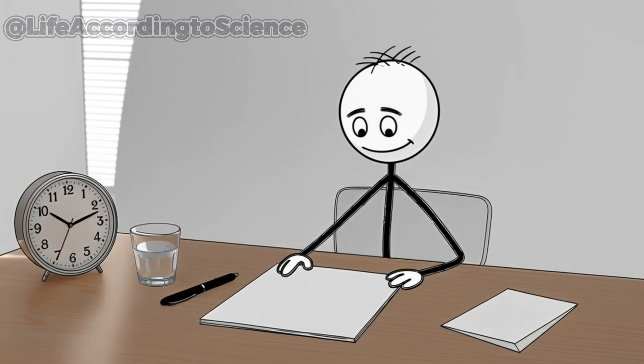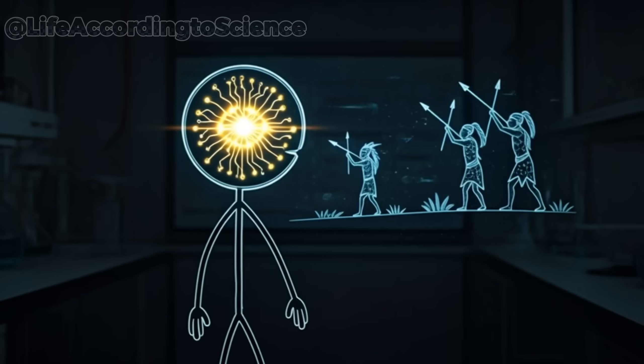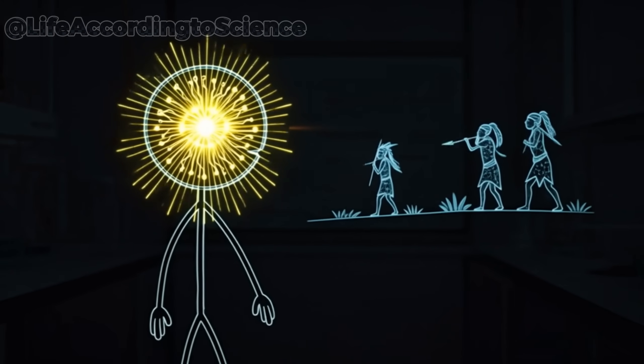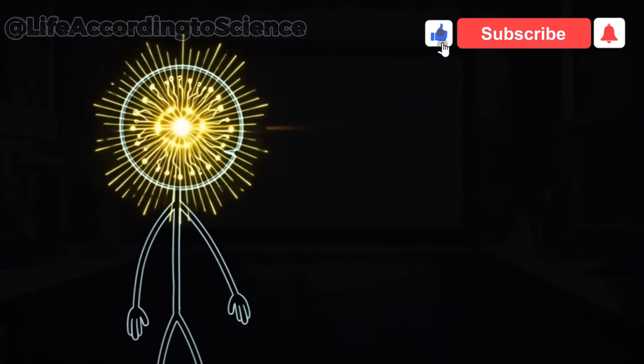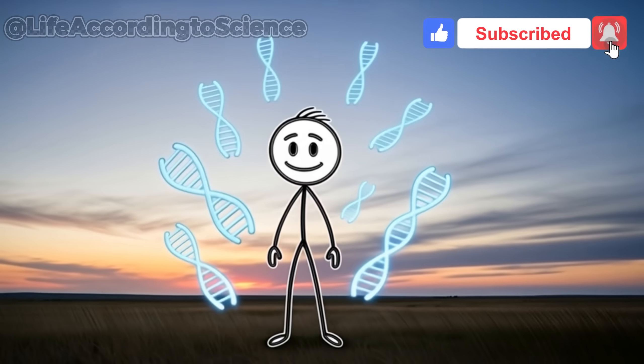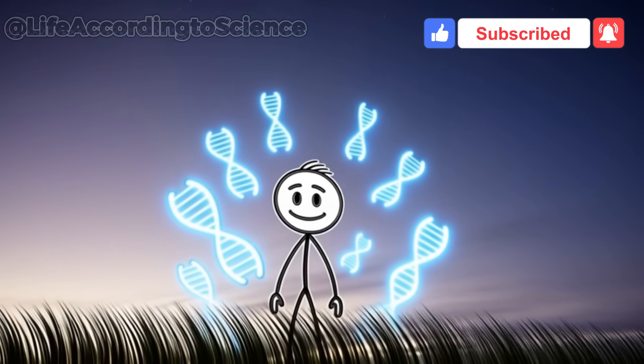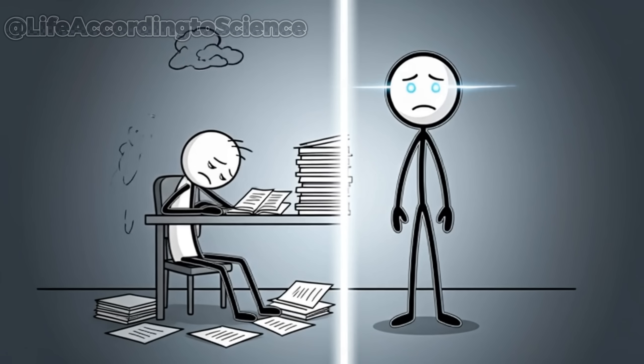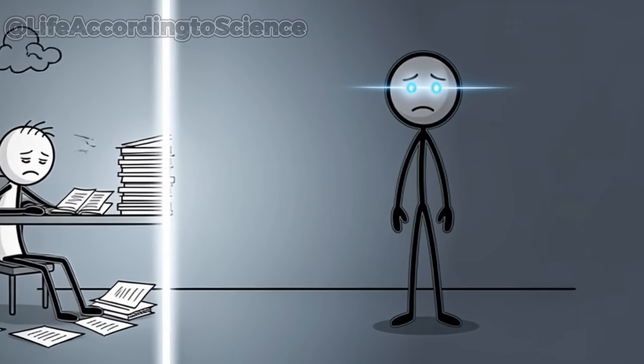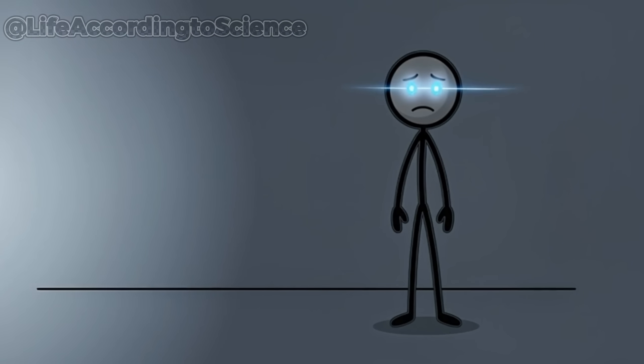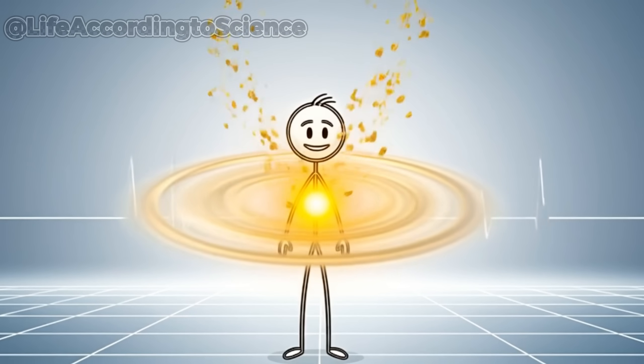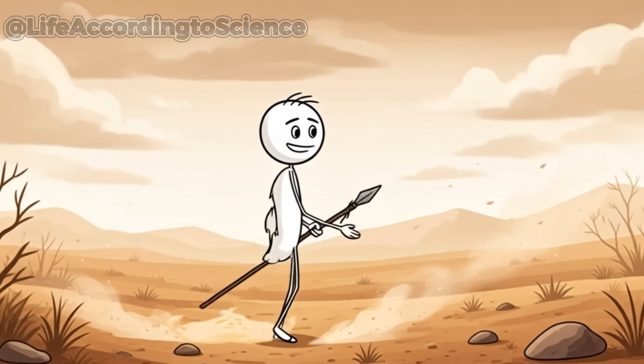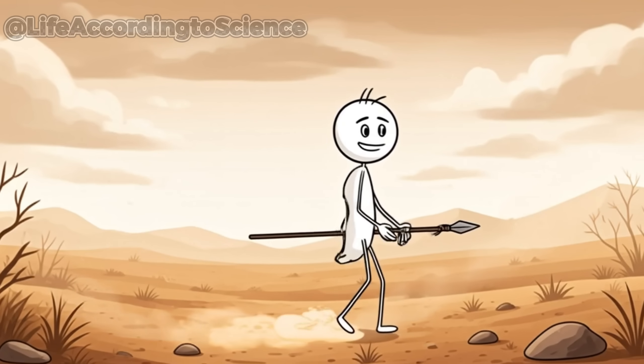By the second hour, your brain starts to switch gears. It slows certain non-essential functions and prioritizes focus and alertness, evolution's way of helping you hunt or find food. It's a survival trick coded deep into our DNA. Interestingly, you might even feel sharper, more awake. That's your body's ancient instinct kicking in.